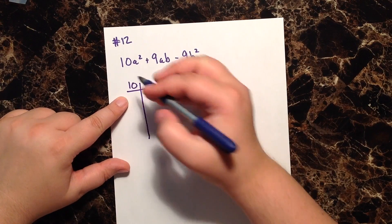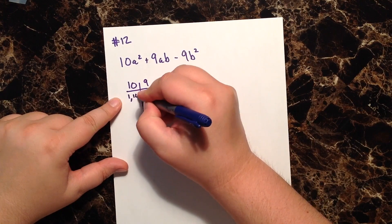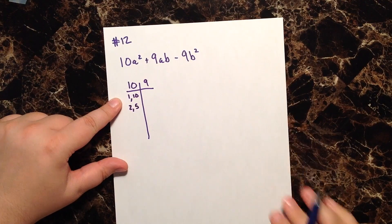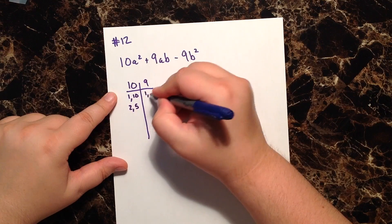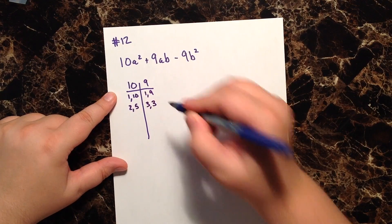The factors of 10 are 1 and 10, 2 and 5, and the factors of 9 are 1 and 9, and 3 and 3.